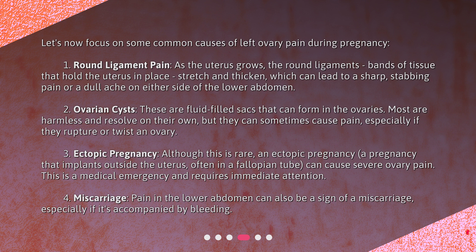2. Ovarian Cysts: These are fluid-filled sacs that can form in the ovaries. Most are harmless and resolve on their own, but they can sometimes cause pain, especially if they rupture or twist an ovary. 3. Ectopic Pregnancy: Although this is rare, an ectopic pregnancy — a pregnancy that implants outside the uterus, often in a fallopian tube — can cause severe ovary pain.